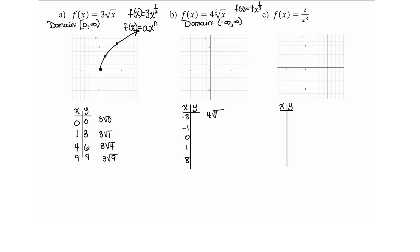4 times the cube root of negative 8. Well, the cube root of negative 8 is negative 2. 4 times negative 2 is negative 8. Then negative 1: 4 times the cubed root of negative 1. Cubed root of negative 1 is negative 1, 4 times negative 1 is negative 4. Plugging in 0 for x, cube root of 0 is 0, 4 times 0 is 0. Plugging in 1 for x, cube root of 1 is 1, 4 times 1 is 4. And then plugging in 8, 4 times cube root of 8 is 2. 4 times 2 is 8.